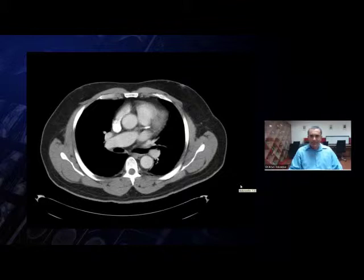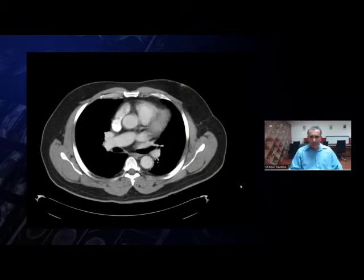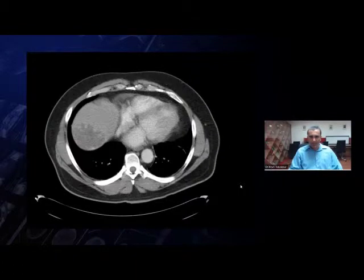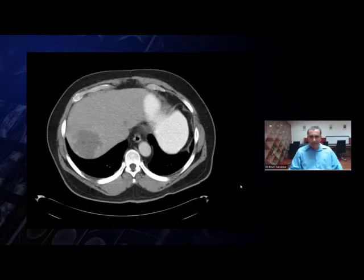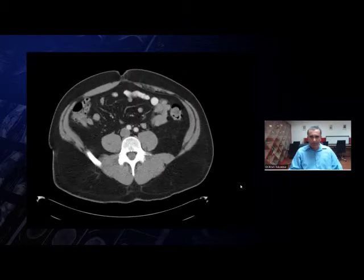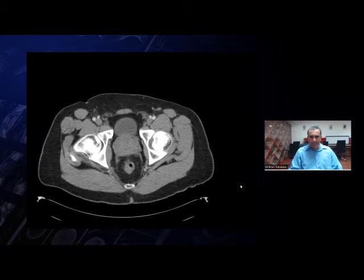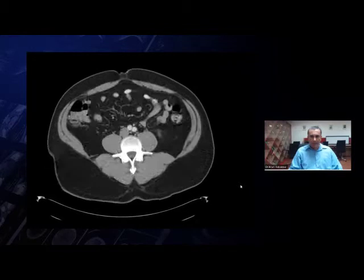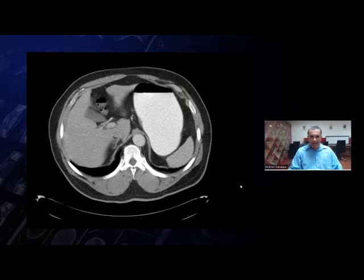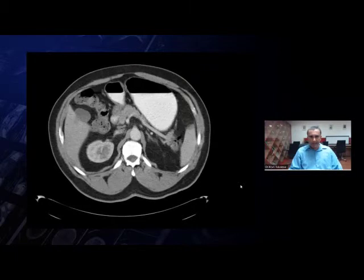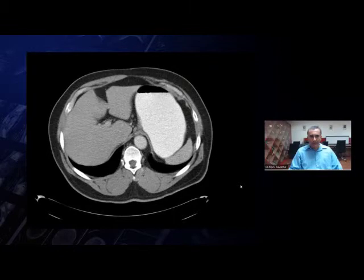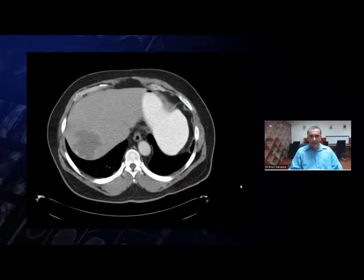Here is an interesting case from the emergency room, interesting for a variety of reasons. Let's look at it once very quickly and then discuss. We're scrolling from top to bottom — it's a CT scan of the abdomen and pelvis with oral and intravenous contrast. One of the reasons this case is interesting is because it tells you that the most obvious finding is not necessarily the one of significance.